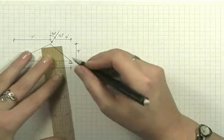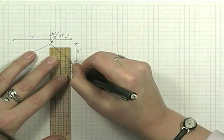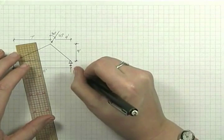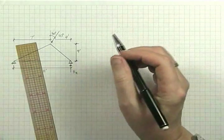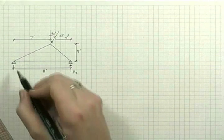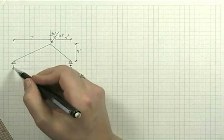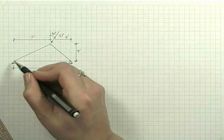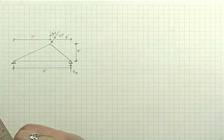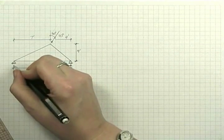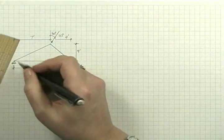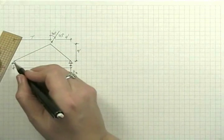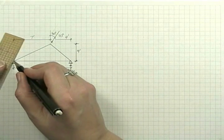We know that the vertical reaction on the right-hand side is indeed vertical because it's a roller support. From the previous analysis, we know that the left-hand support has both a vertical component and a horizontal component. But initially, we don't know what the angle is, neither do we know the magnitude.